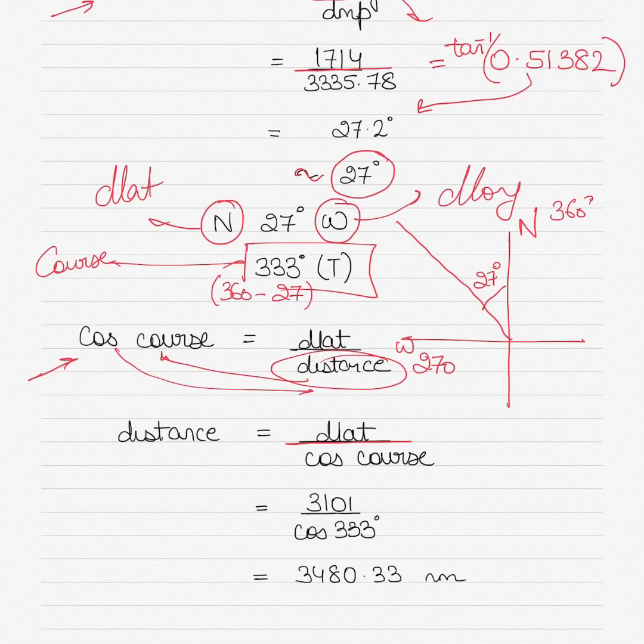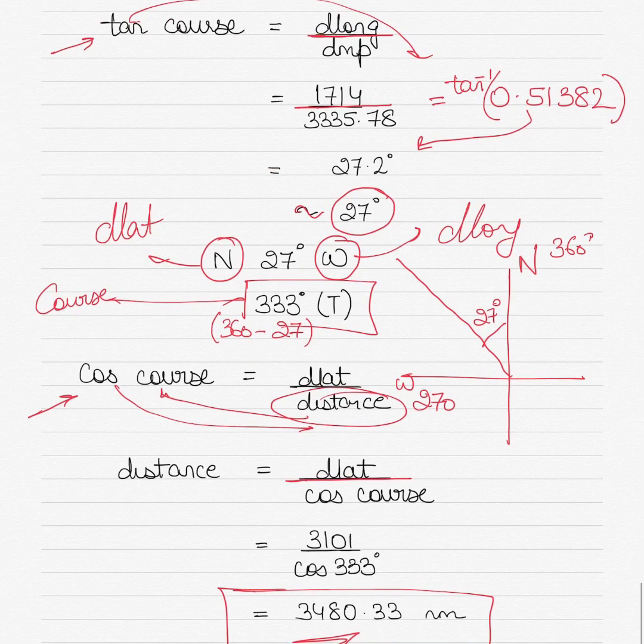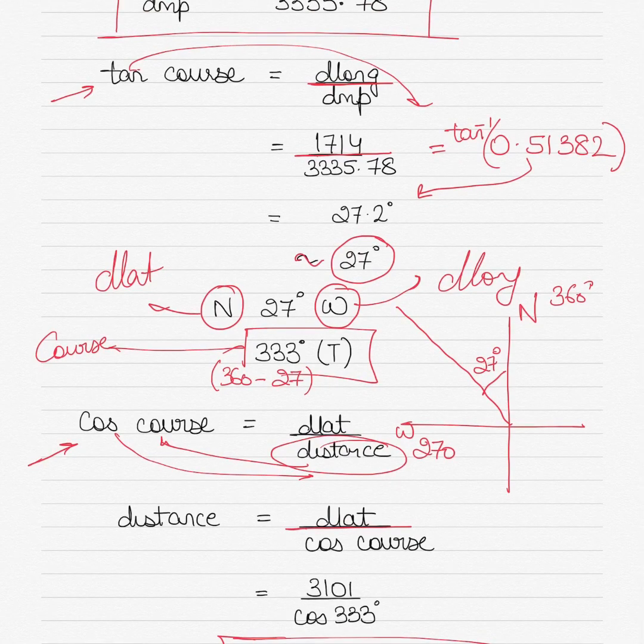This answer might slightly differ depending on what course value you take. So if you have taken 333.8 or 333.2 or something, the answer will slightly differ, but the answers will be right anyway. In the larger scheme of things, it will not matter so much. It will be in a range depending on the number of decimal places you take and the course value you take. So don't stress too much about that. All the answers will be correct if you have done the correct method.